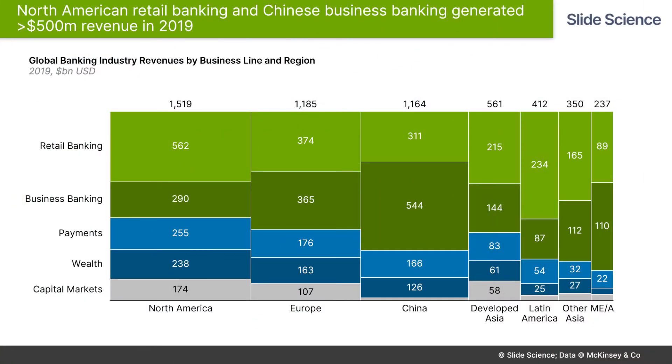Hey guys, today we're going to learn how to build a Mekko chart in ThinkCell. A Mekko chart is a two-dimensional stacked chart that shows information both in terms of the height of the chart and the width of the chart. It looks something like this, and today we're going to design that exact chart.